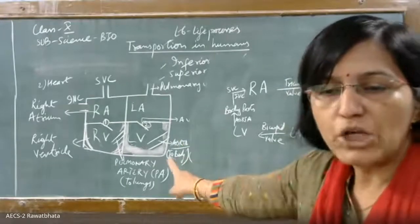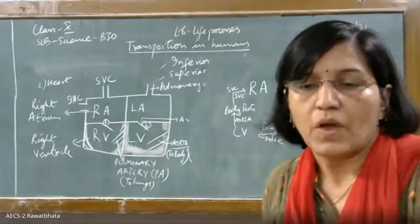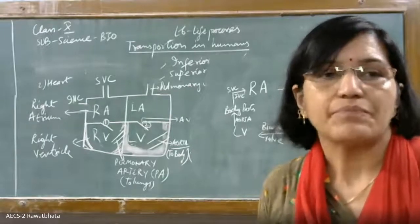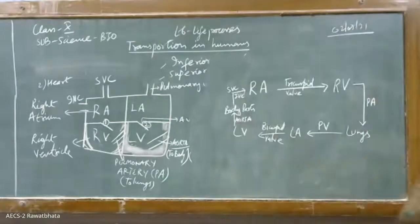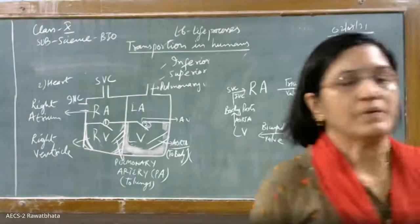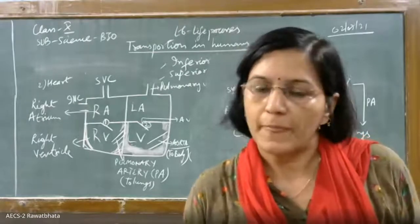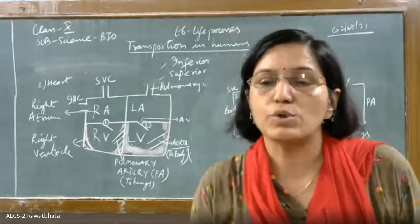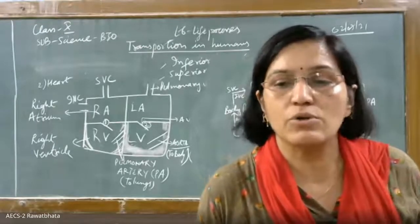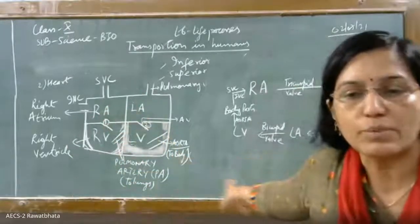In the human heart, there is no mixing of oxygenated and deoxygenated blood — complete separation is maintained. Mixing would be very harmful. In lower organisms, the number of heart chambers differs, and blood may mix — we will compare heart chambers across various organisms in the next class.